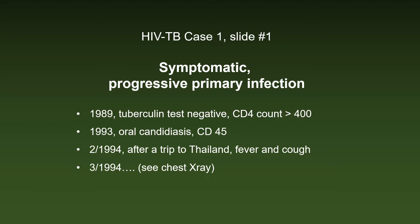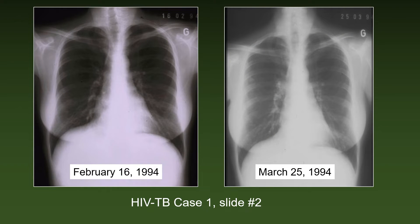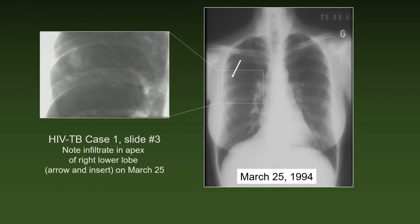Her physician did a chest X-ray on February 16, 1994. It is essentially normal. Five weeks later, however, can you spot what changed? There was a discreet infiltrate in the apex of the right lower lobe, which is a typical location for the so-called primary TB complex. It is well visible in the insert on the left.